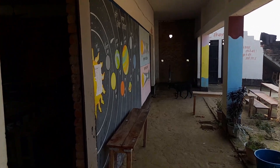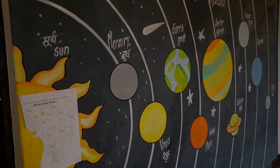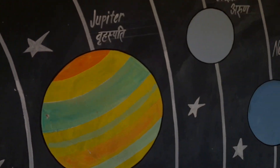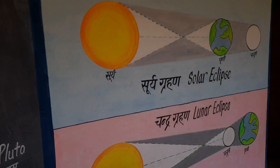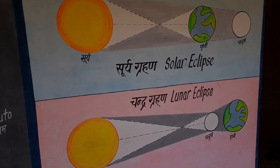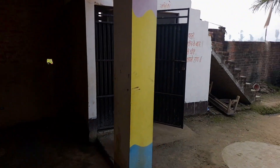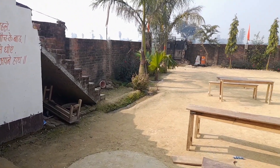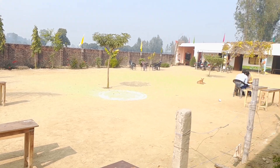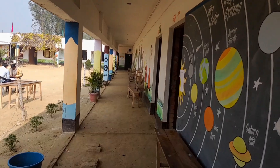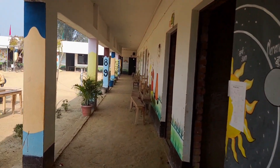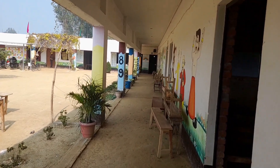You can see here our solar system written in both English and Hindi. In this picture you can see solar eclipse and lunar eclipse. This is a hand pump at our school, and this is the toilet, and this is the ground.